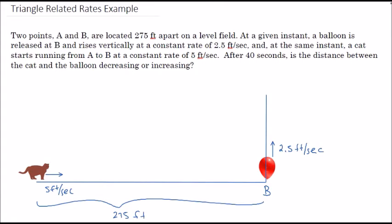Right now this is 275 feet, and we have both the balloon and the cat that are going to start moving. The cat's going to move to the right and shorten that distance up a little bit, and the balloon is going to move upward, making the distance between the cat and the balloon somewhat different. Let's consider this situation in 40 seconds.